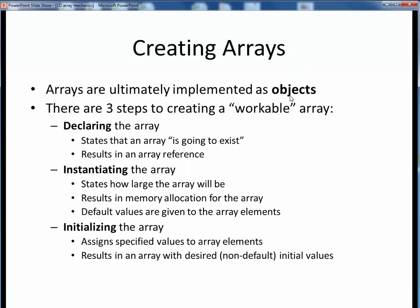Ultimately, under the hood, arrays are implemented as objects, similar to what we've seen for strings or any other type of objects. Here are the three steps we need to perform to create a usable array. First, we need to declare an array, which is just a statement that some array is about to exist. Declaring an array results in an array reference, which is analogous to a string reference or a general object reference.